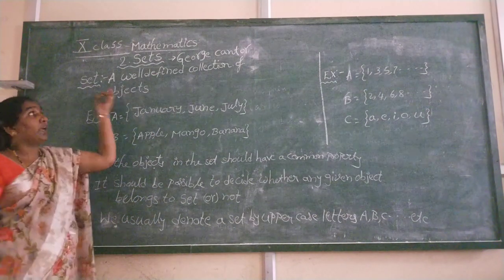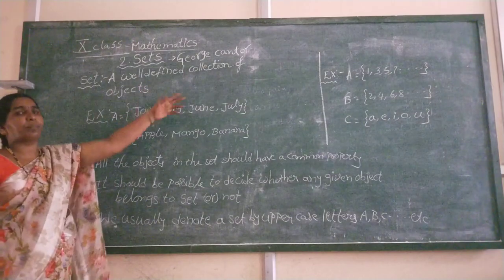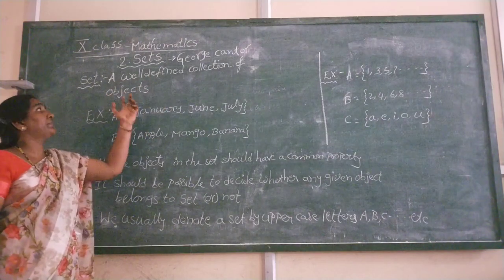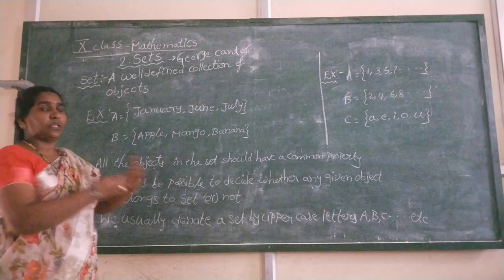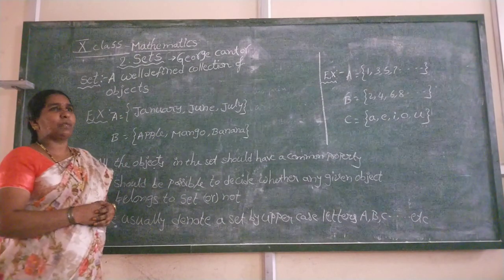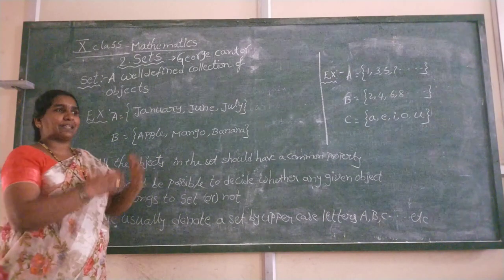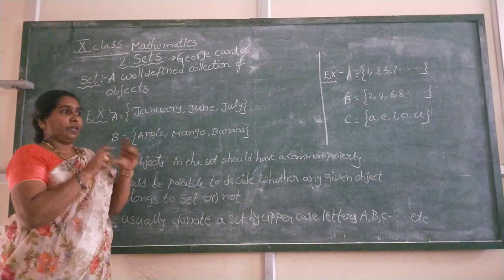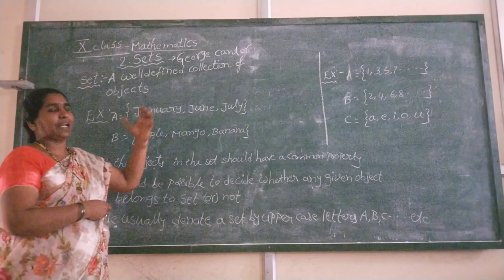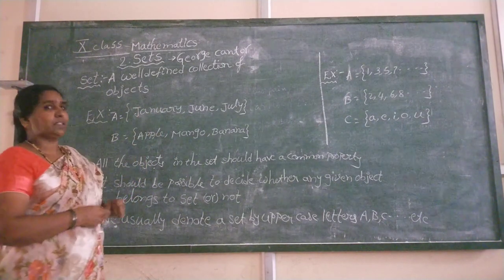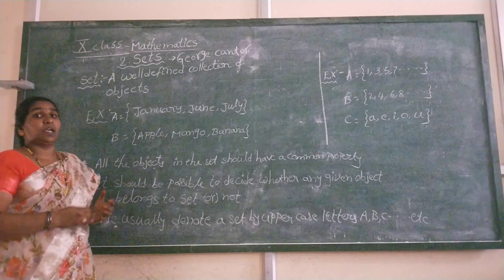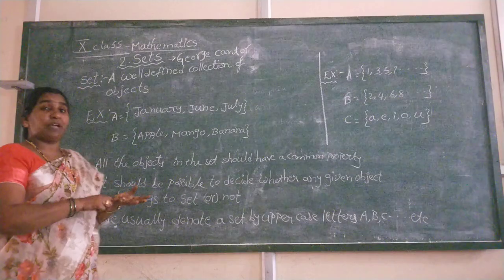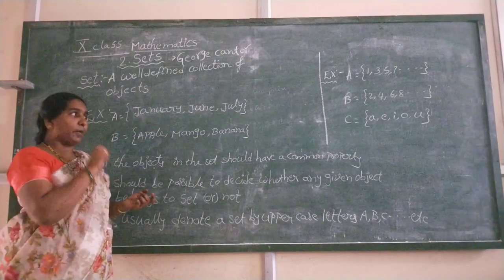What is the meaning of set? A well-defined collection of objects is called a set. First we are going to know about the collection. What is the meaning of collection? We collect some coins, we collect some stamps, we collect some numbers — all those are collections. What is the meaning of well-defined? Well-defined means every element in a set follows a common property.